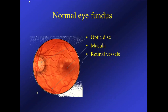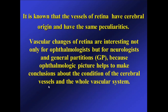On this picture you can see the normal eye fundus which we can see during ophthalmoscopy. This is the disc of the optic nerve. This is the central part of the retina, the macular area. These are the vessels — this is a vein, this is an artery. The artery is usually thinner than the vein. The vessels of the retina have cerebral origin and the same peculiarities, making vascular changes interesting not only for ophthalmologists but also for neurologists and GPs.